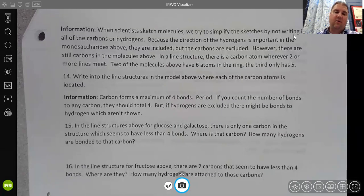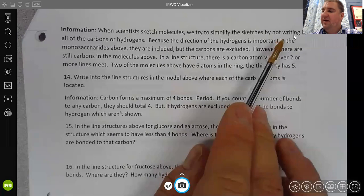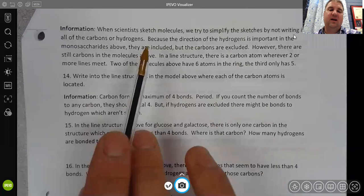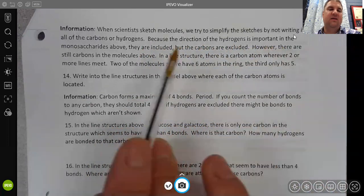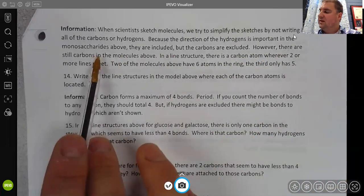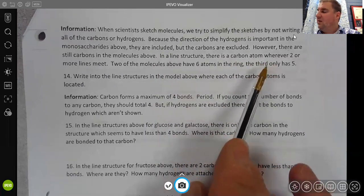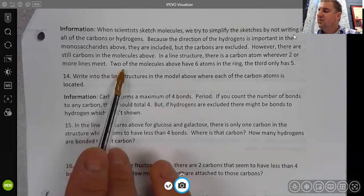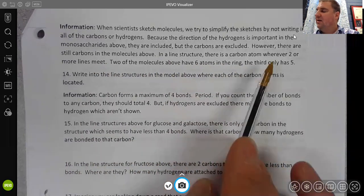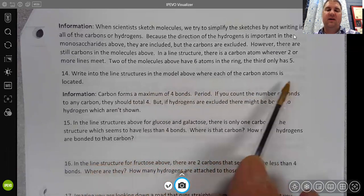Now we're going to continue to look at that model and use this information here. This is extremely important when we think about how we draw molecules. When scientists sketch molecules, we try to simplify the sketches by not writing in all of the carbons or hydrogens. The hydrogens in the monosaccharides above are included, but the carbons are excluded. However, there are still carbons in the molecules above. In a line structure, there is a carbon atom wherever two or more lines meet. Two of the molecules above have six atoms in the ring. The third only has five. Question 14 says write into the line structures in the model above where each of the carbon atoms is located.